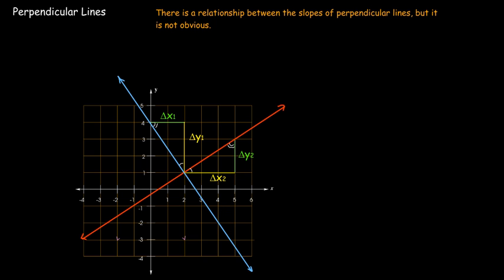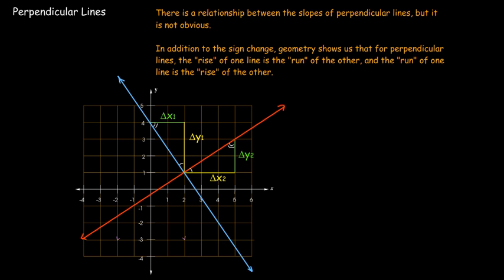Now, to see the connection, we have to do a little bit of geometry, and I'm not going to go through all the details here. This is the picture that we can see. Apart from having opposite signs, we can see that the run, the horizontal change for one line, is the vertical change for the other line, and vice versa.